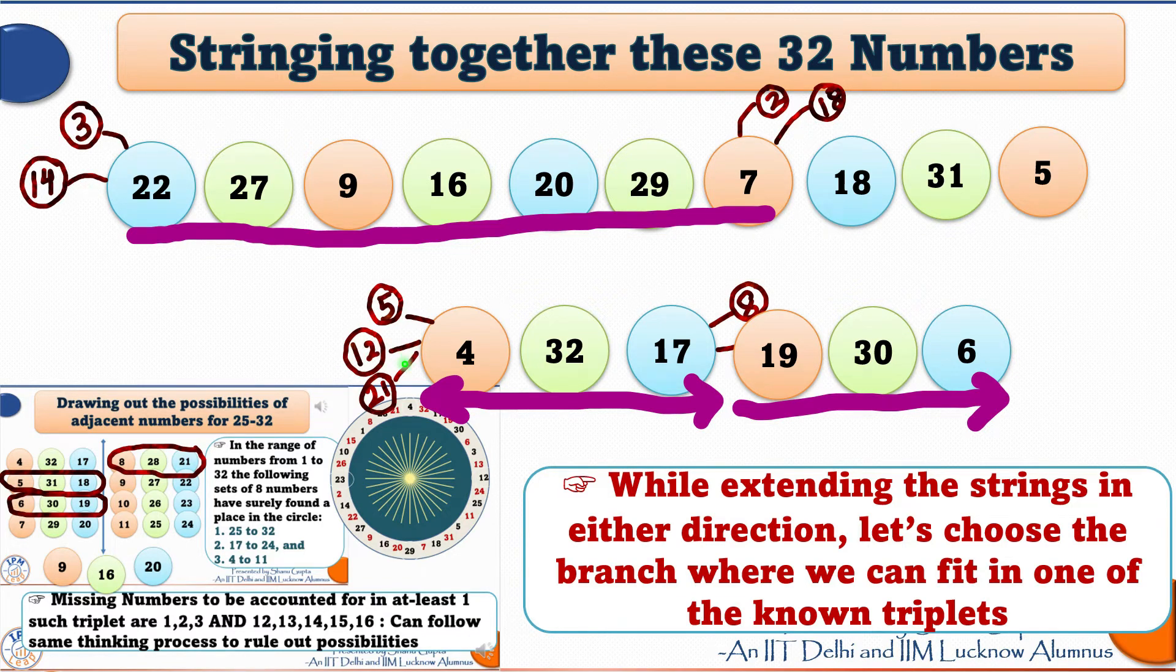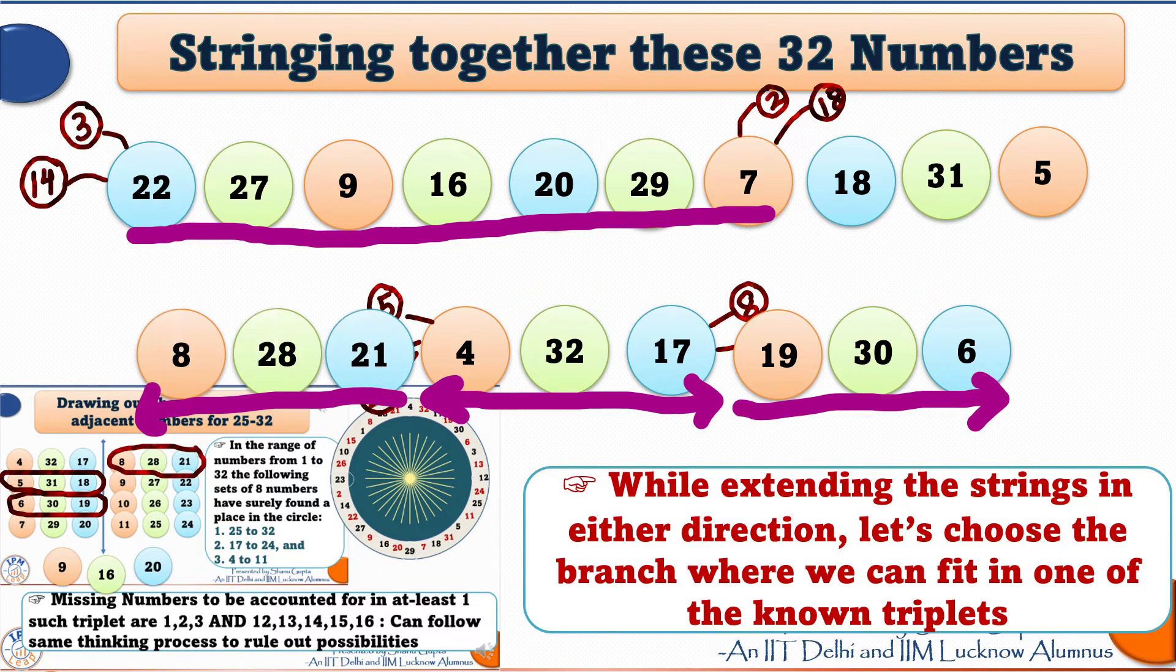Extending it to the left, I will choose the branch 21 because 21, 28 and 8 is a known triplet. Now, look at the number 8. Perfect squares greater than 8 are the number 9, 16 and 25. Accordingly, we can have 1 or 8 or 17 to the left.